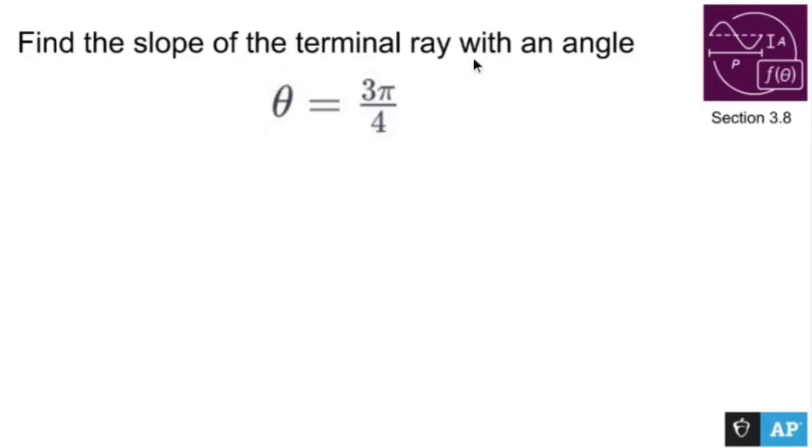Find the slope of the terminal ray with an angle theta equals 3 pi over 4. All right, so I have 3 pi over 4. What's the slope of the terminal ray mean?